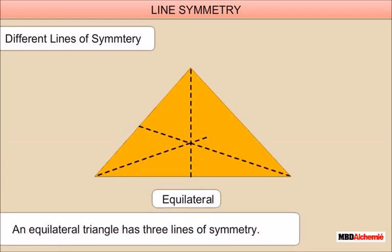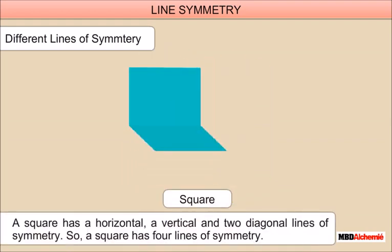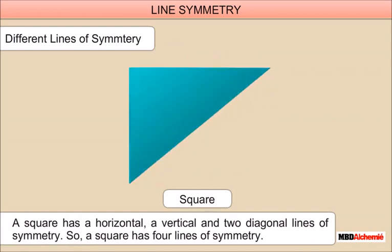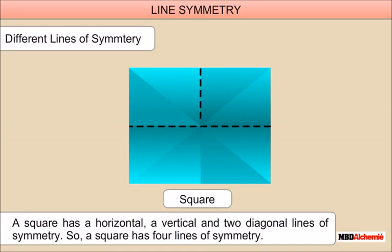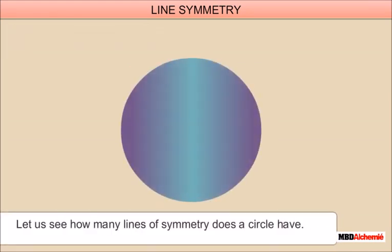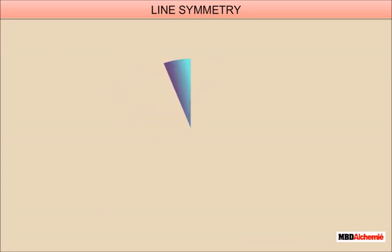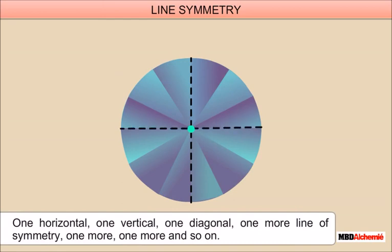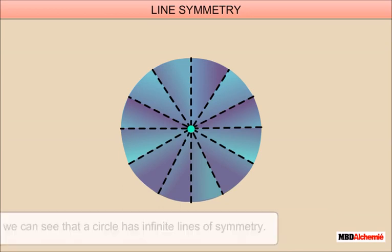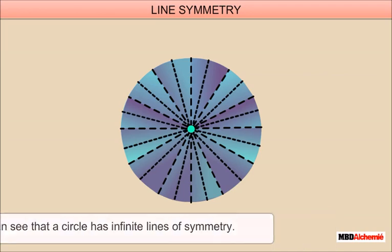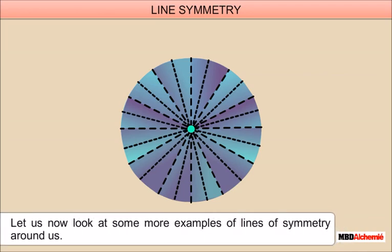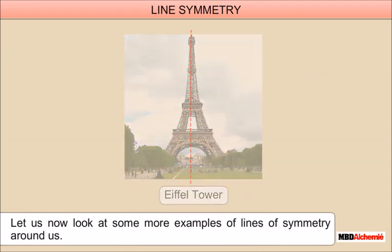An equilateral triangle has three lines of symmetry. A square has a horizontal, a vertical, and two diagonal lines of symmetry, so a square has four lines of symmetry. Let us see how many lines of symmetry a circle has: one horizontal, one vertical, one diagonal, and more lines can be drawn. A circle has infinite lines of symmetry. Some real-world examples include the Eiffel Tower and scissors.